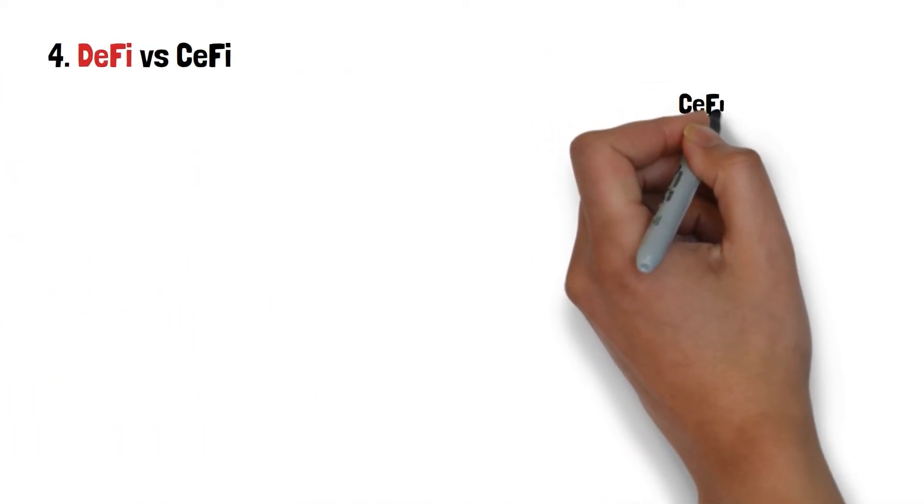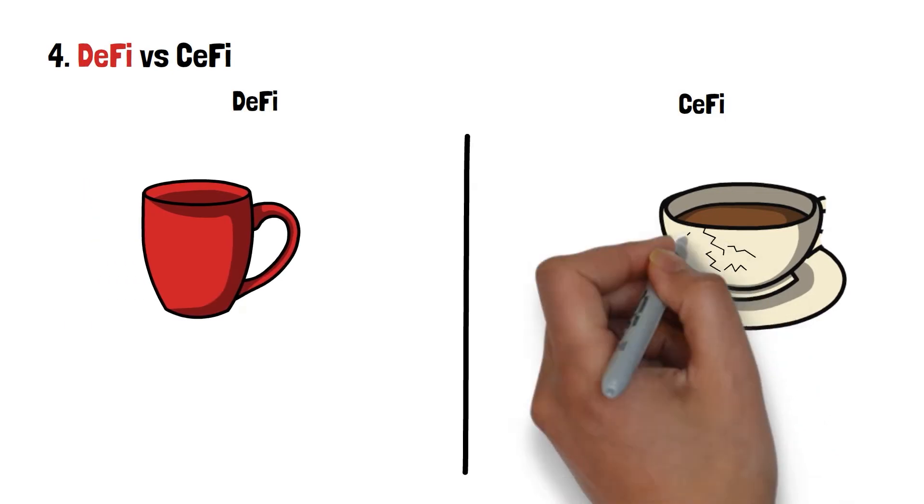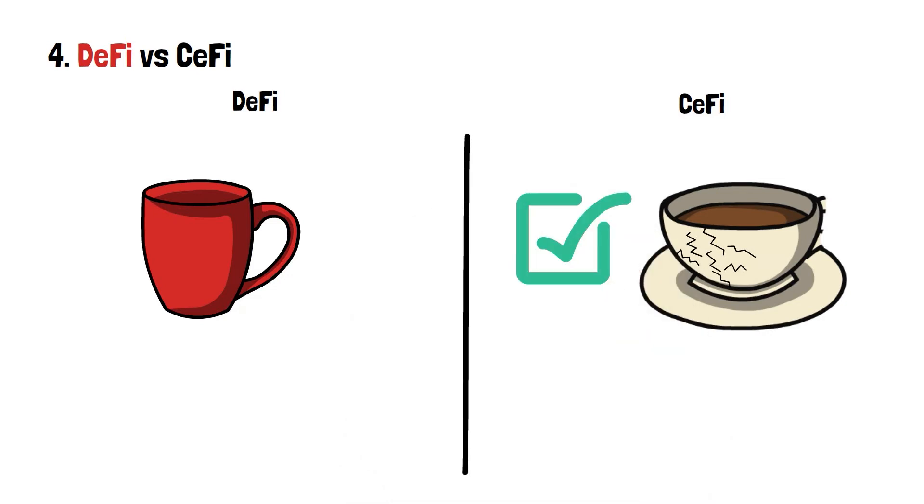This is where we get into the differences between traditional and decentralized finances. Imagine that, on the table in front of you, there are two cups. One of them is old and worn down, with a broken handle and even some bruises. But you can still drink coffee or tea from it, no problem. The other cup is brand new, shiny and decked down with various ornaments.